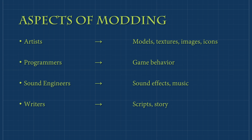Just like there are multiple aspects to developing a game, there are multiple aspects to modding one as well. Artists are needed for game models, textures, images, and icons. A programmer is needed to write behavior in the game. A sound engineer for sound effects and music, and a story writer for scripts and story. Of course, there is no story in KSP stock or mod, but who said there couldn't be? Many mods require only one aspect, many require more. If your mod requires an aspect you can't provide, simply find a partner who can. Just remember to credit everyone appropriately.